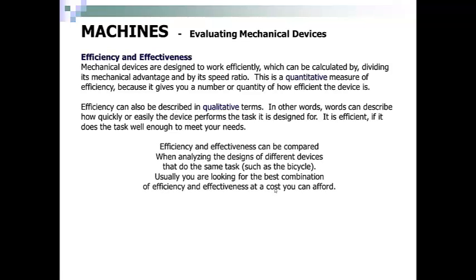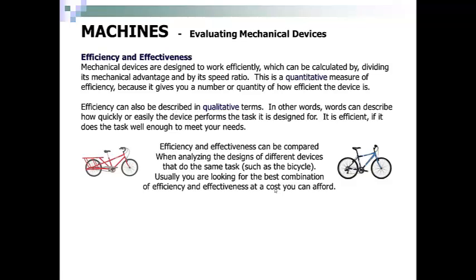Efficiency and effectiveness can be compared when analyzing the designs of different devices that do the same task, such as the bicycle. Usually, you are looking for the best combination of efficiency and effectiveness at a cost you can afford. So the choice between two bicycles — one is a road bike, the other is a mountain bike — all depends on the task.